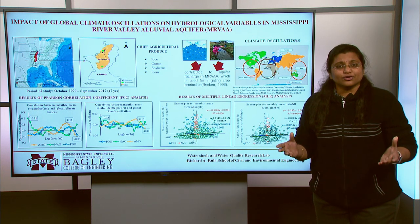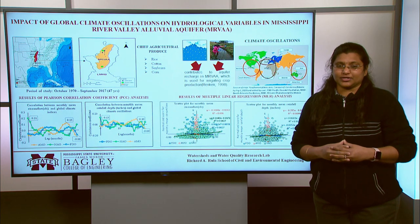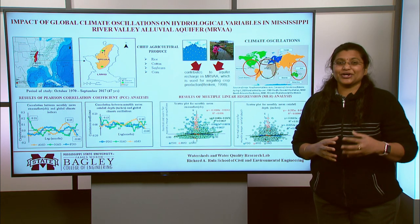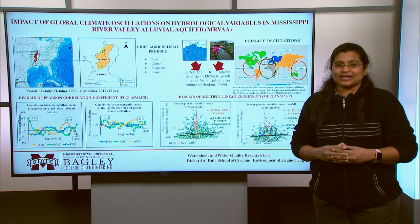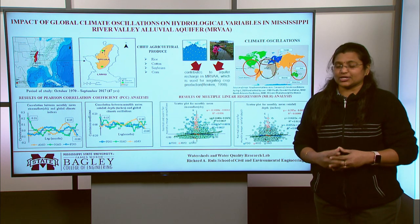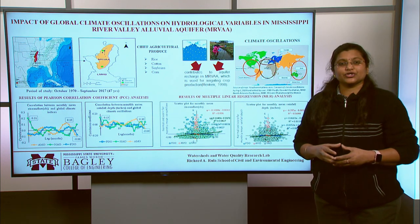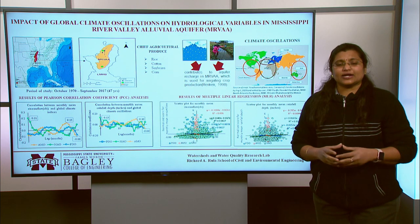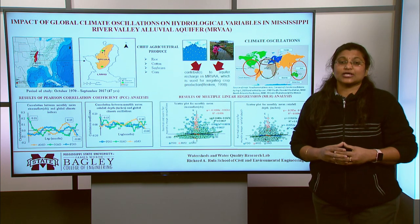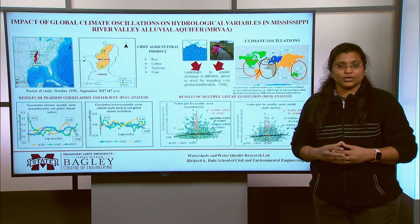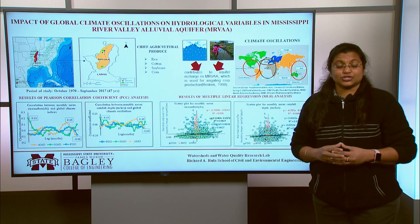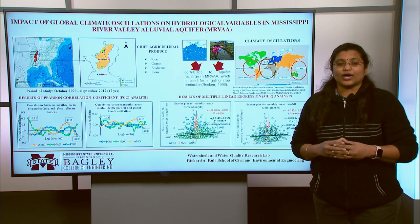Okay, but how does a global phenomenon affect our local variables by impacting our breakfast table? In order to understand and assess this, my research employed statistical analysis including Pearson Correlation Coefficient and Multiple Linear Regression analysis. The results of the PCC indicated that each of the climate oscillations has a significant impact on the local variables. The predominant association is with the North Atlantic Oscillation, which is having increased streamflow and rainfall.